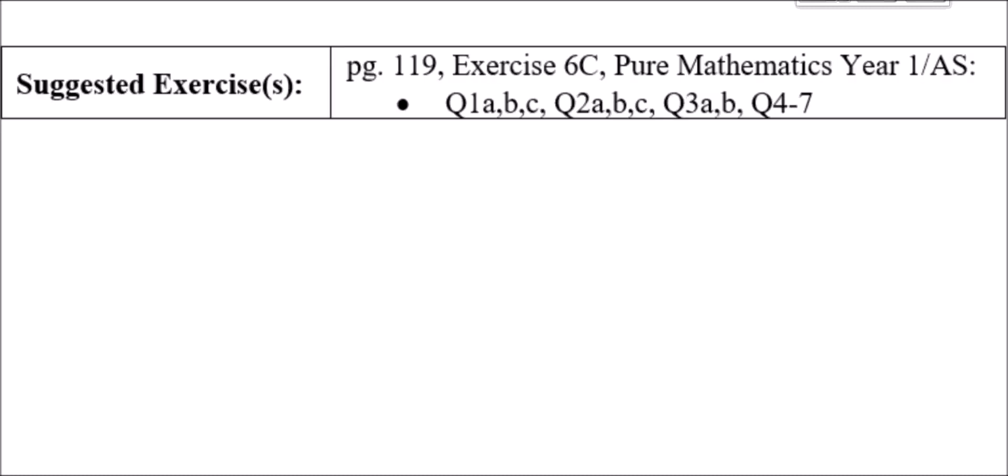Now it's over to you to practise these ideas. Turn to page 119, exercise 6C in the pure book. Try questions 1a, b, c; question 2a, b, c; questions 3a and b; and then questions 4 through to 7. Use the book to check your answers. If they're not correct, think about why and make corrections. If you're still stuck, do ask. Thanks for listening, and you'll hear from me soon — bye for now.